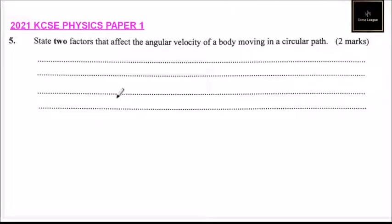Question number five. State two factors that affect the angular velocity of a body moving in a circular path.